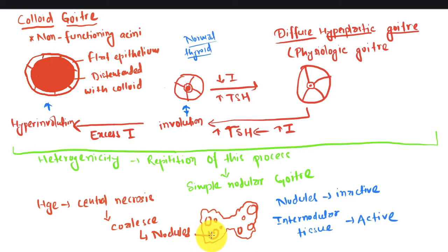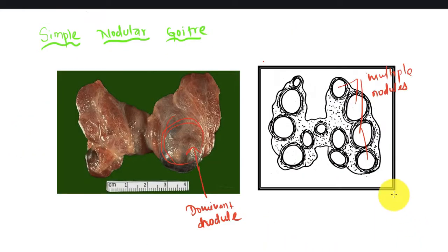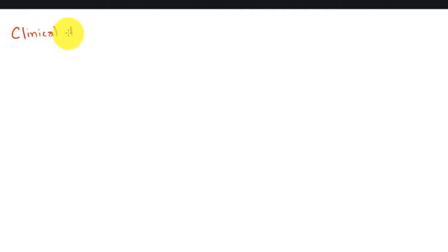These are the nodules here. The nodules are inactive whereas the intranodular tissue is active in this process. You can see here the multiple nodules and the dominant nodule that is clinically palpable.